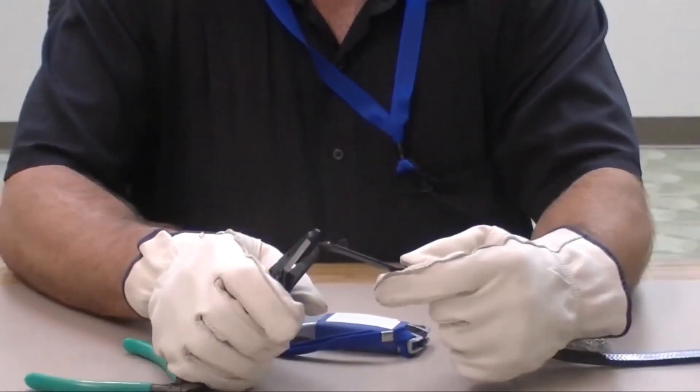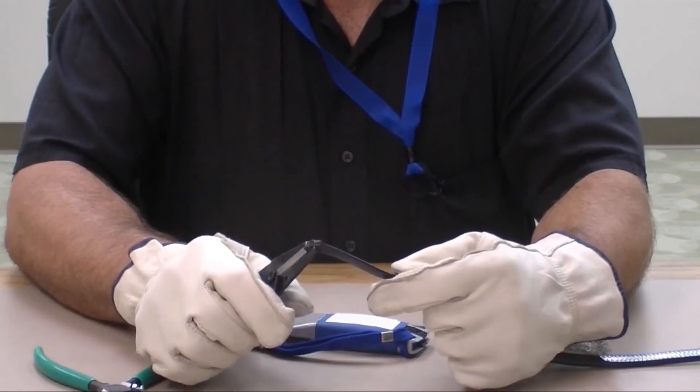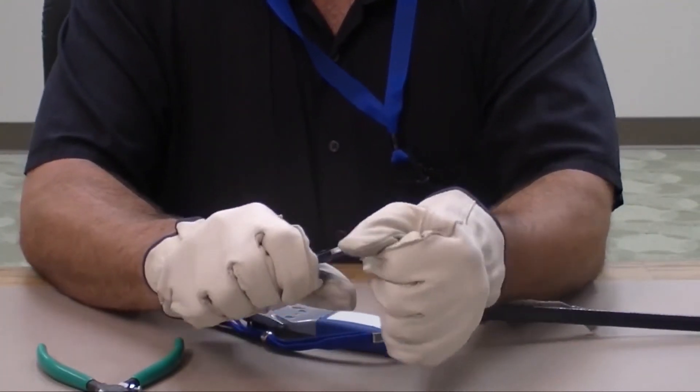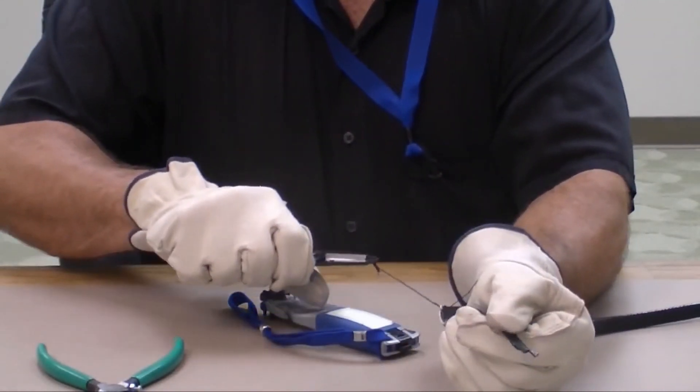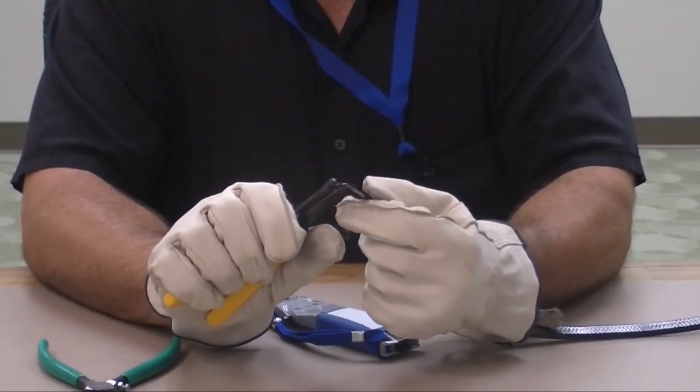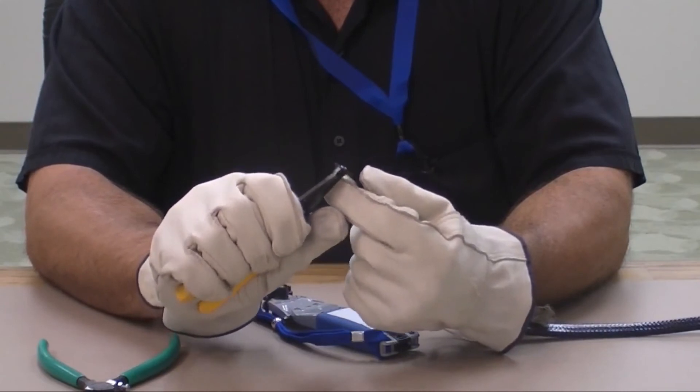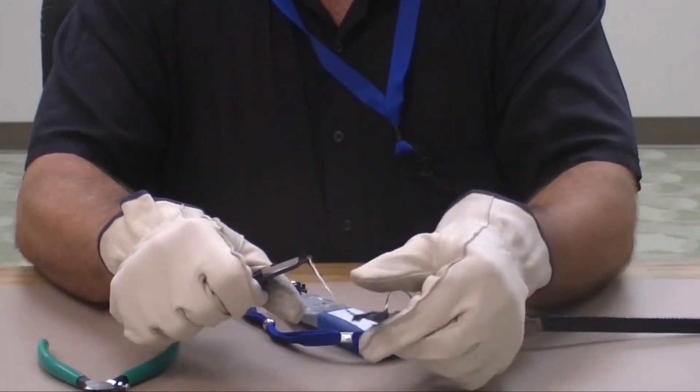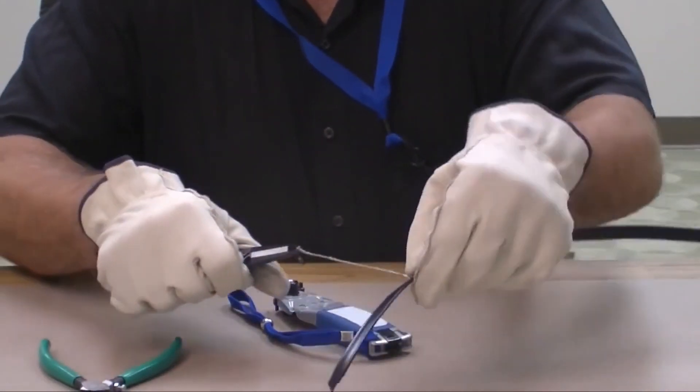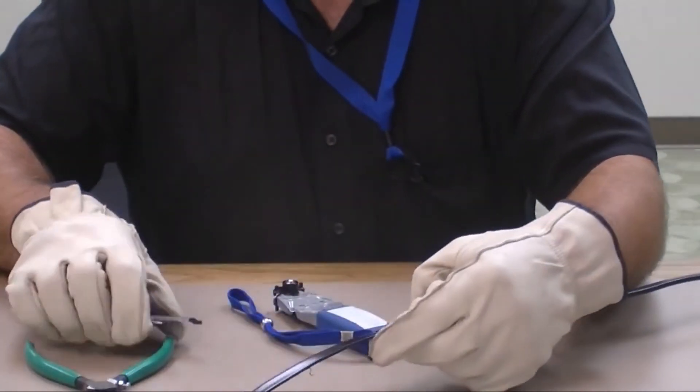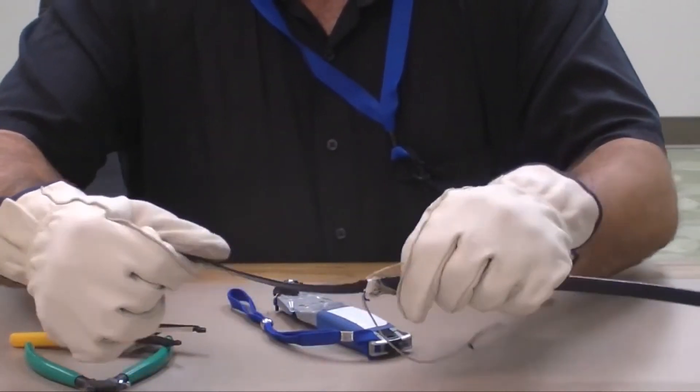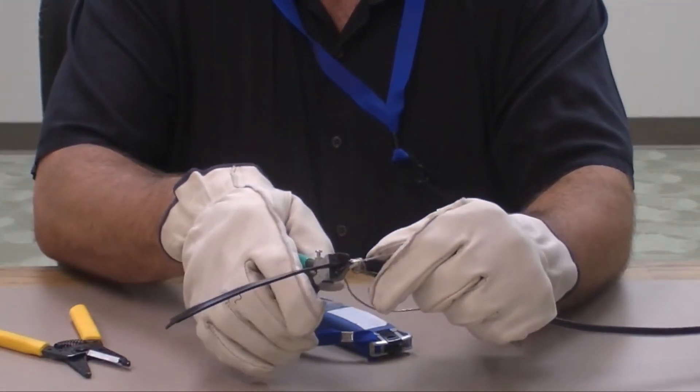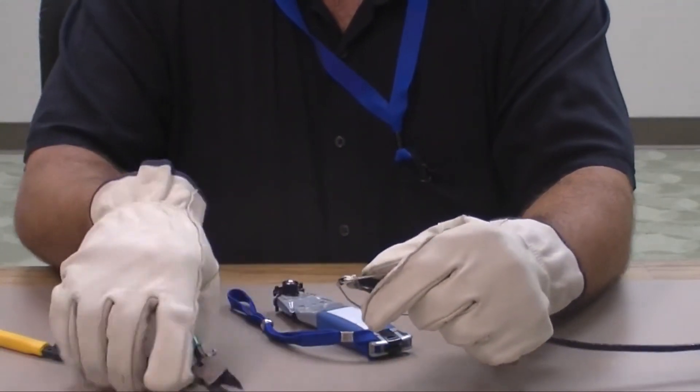Pull out bus wires with needle nose pliers. Use the diagonal cutter to cut away the core and remove any remaining polymer at the end of the bus wires.